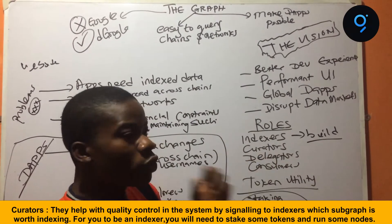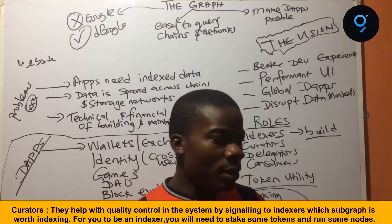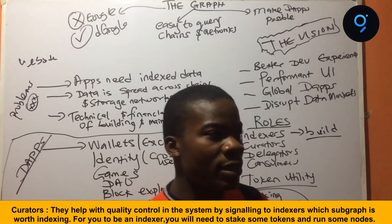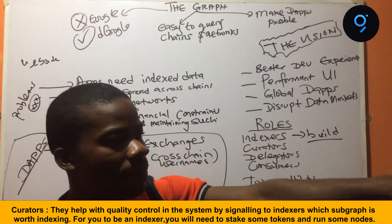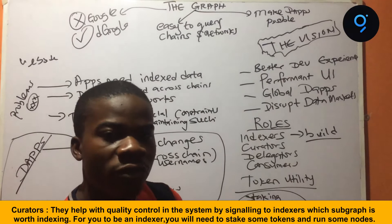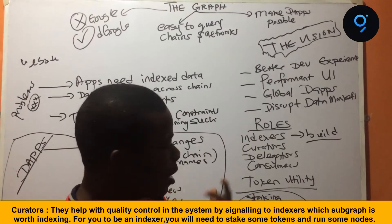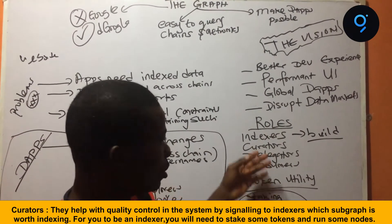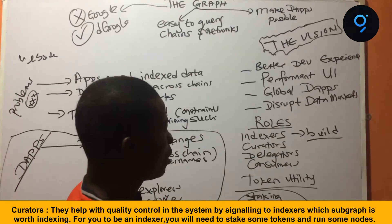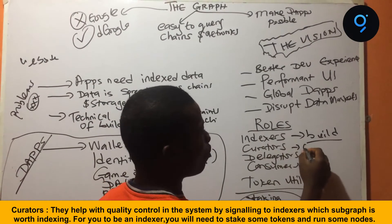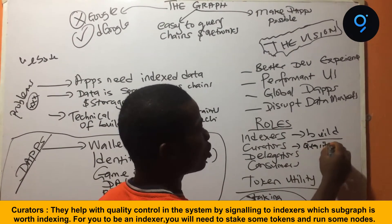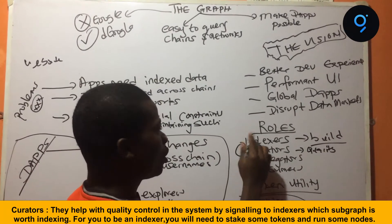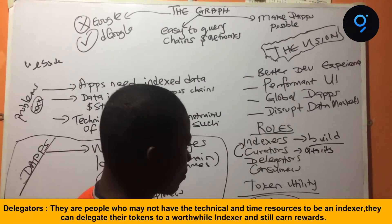And then the curators are the ones who help with quality control in the system. This particular data has information that is very useful, so let's index this. So the curators are the ones we can call quality assurance people. They signal, saying please, you can index or view this subgraph.